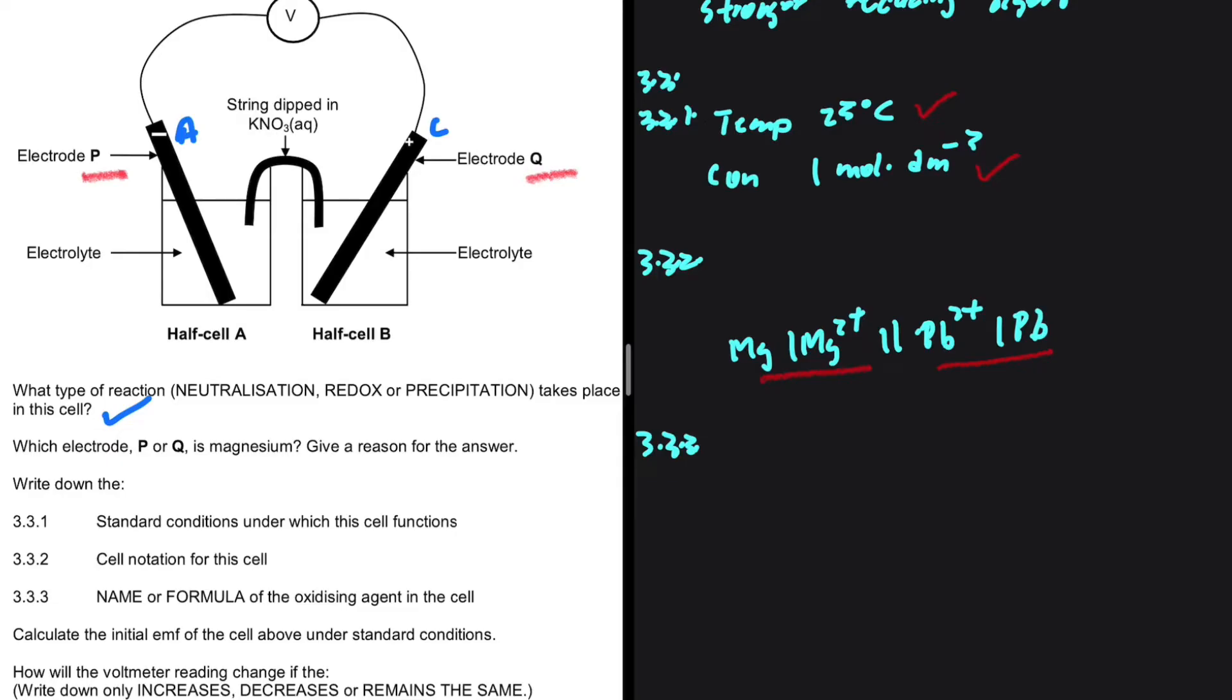the oxidation half reaction, we're going to have Mg giving us Mg 2 plus plus 2 electrons. This Mg is our reducing agent.